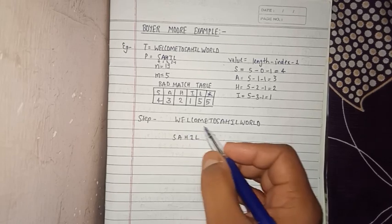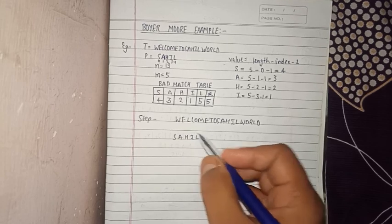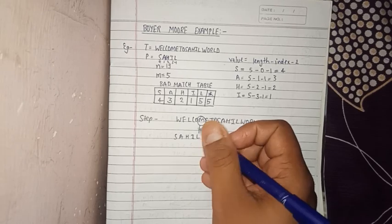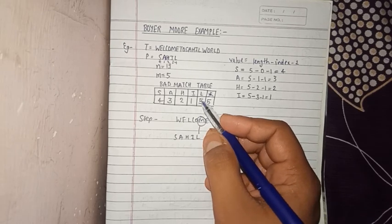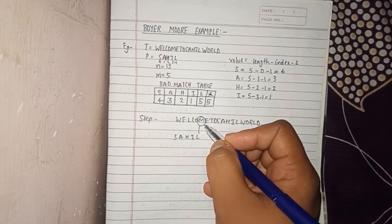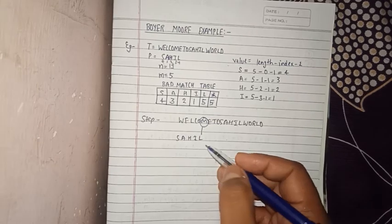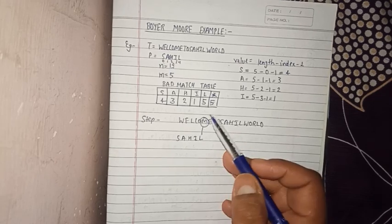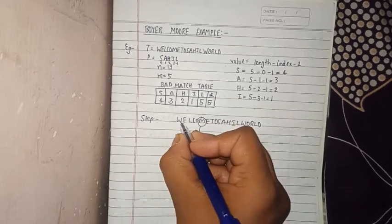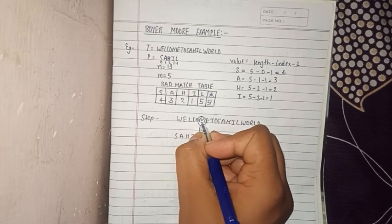Using the bad match table, we now perform the Boyer-Moore algorithm. We write the pattern and the text and compare right to left. We compare 'm' with 'l'. We check if 'm' is in the bad match table — it is not, so we use the star value of five. There is no match of 'l' and 'm', so we shift by five. Counting: zero, one, two, three, four, five.